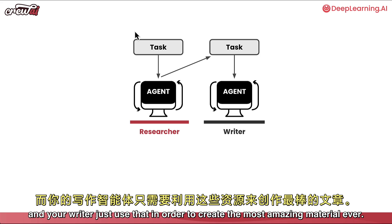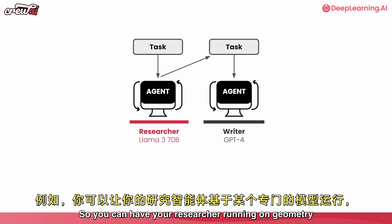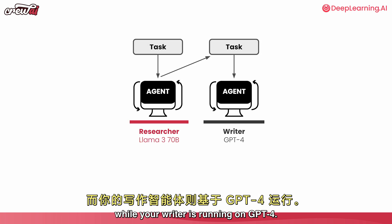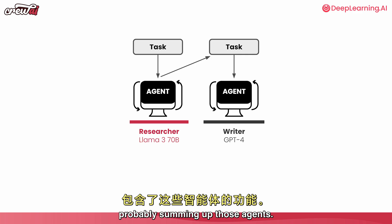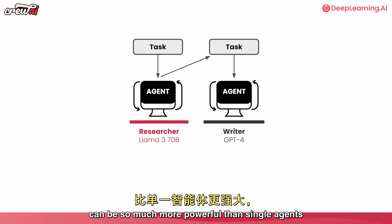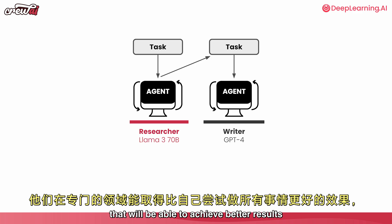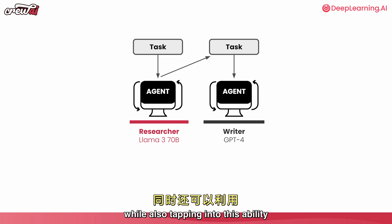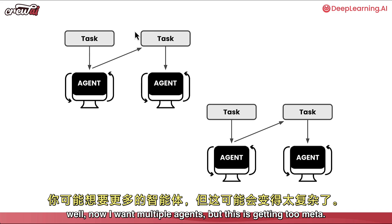Another great benefit is that because you have multiple agents, you can have them run on different LLMs. You can have your researcher running on Llama 3 while your writer runs on GPT-4. You can also have your own fine-tuned model powering some of those agents. Multi-agent systems can be so much more powerful than single agents because they allow you to have very focused agents that achieve better results, while also tapping into the ability to use different models from different sources.